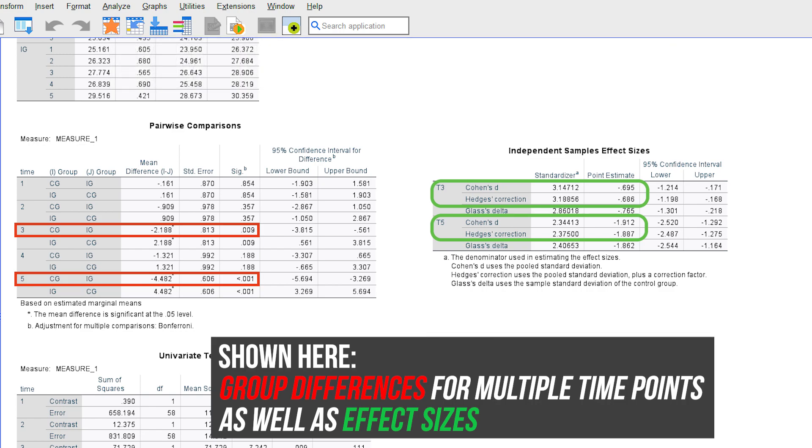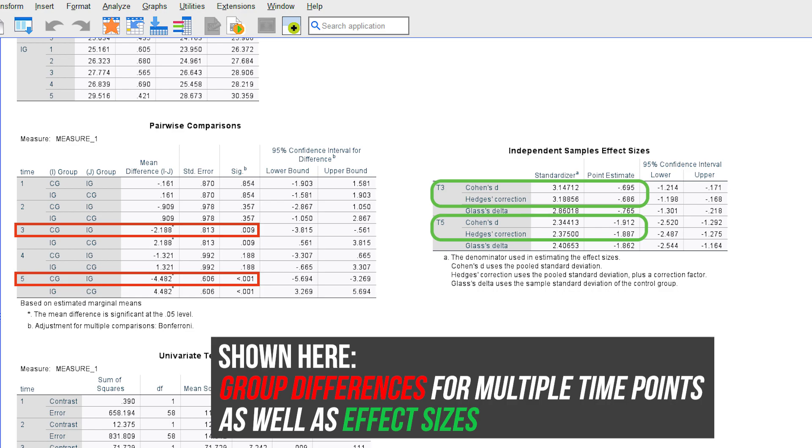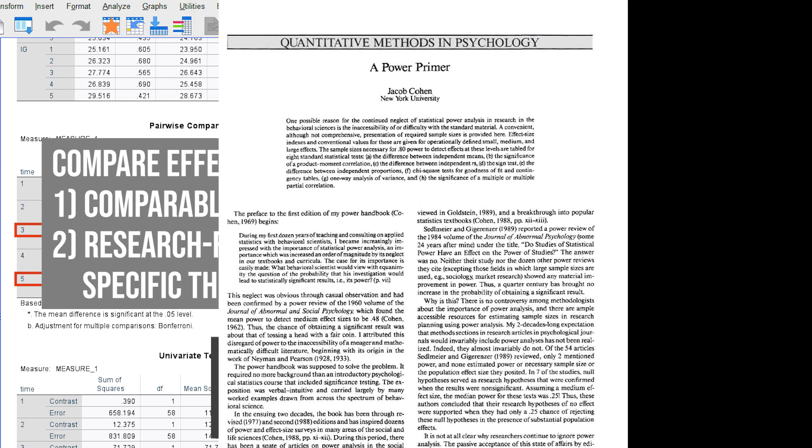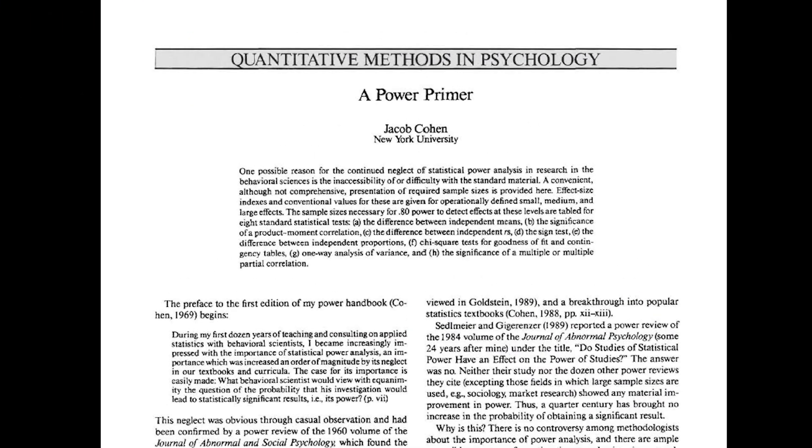Finally, the respective Cohen's D are categorized, which is primarily done with comparable studies or research field specific thresholds again. If neither is available, Cohen 92 and the provided thresholds can be used.